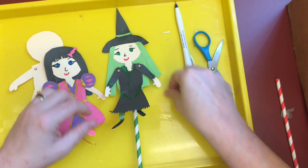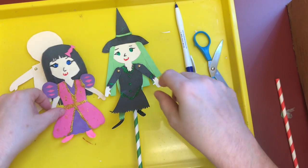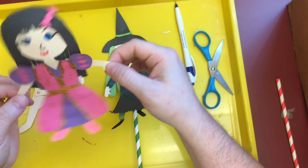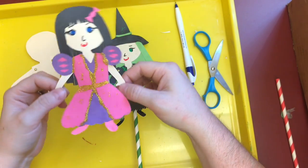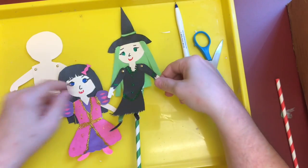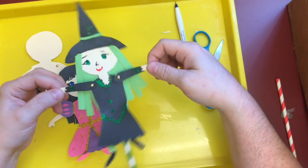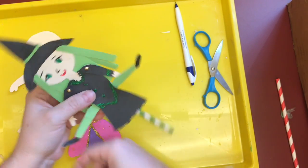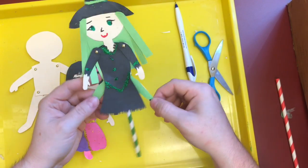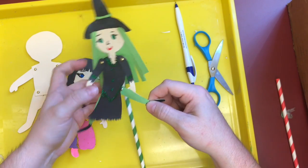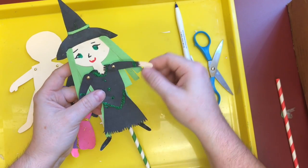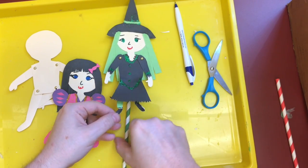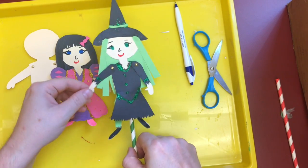You can also see there if you want the puppets to have long sleeves instead of these short sleeves that don't move with her arms. You can trace the arms and legs and you can glue fabric onto the arms and legs before you attach them to your puppet's body. And either one of those will work just fine.